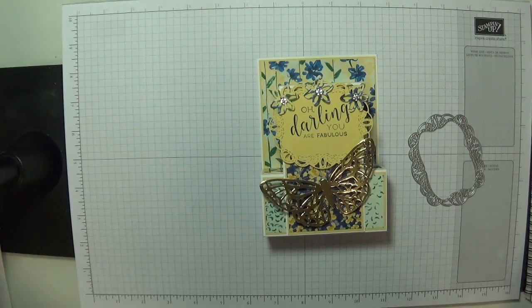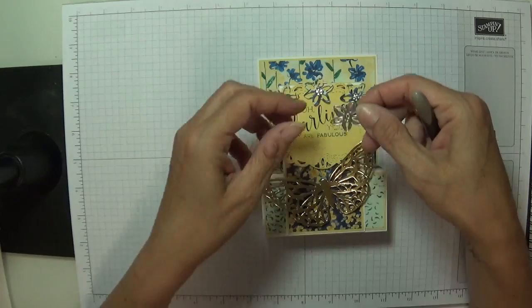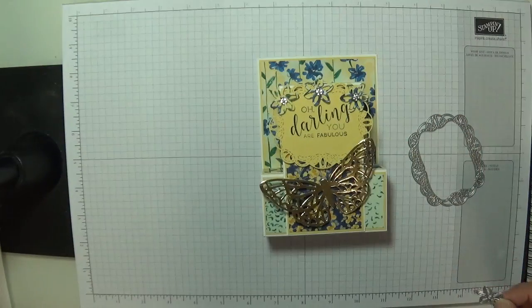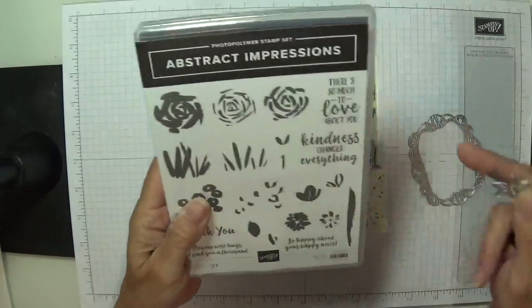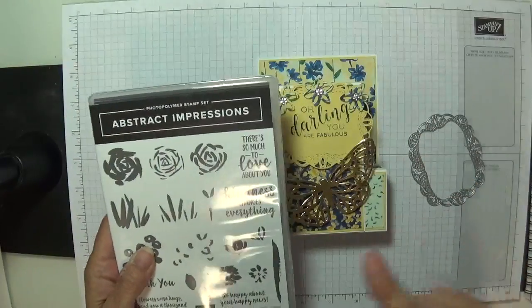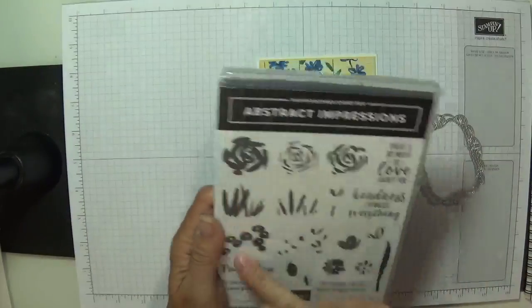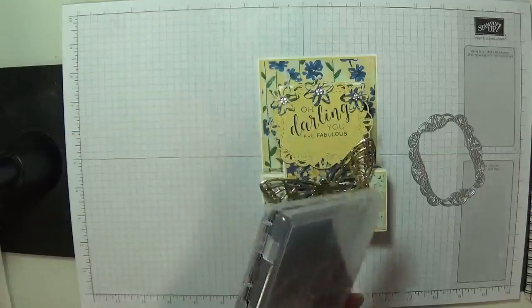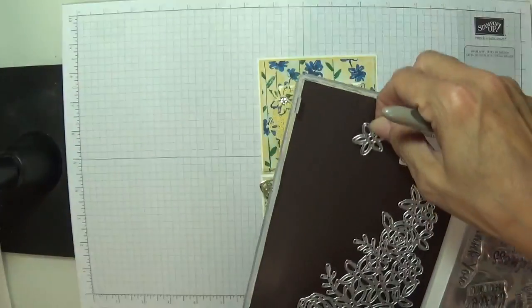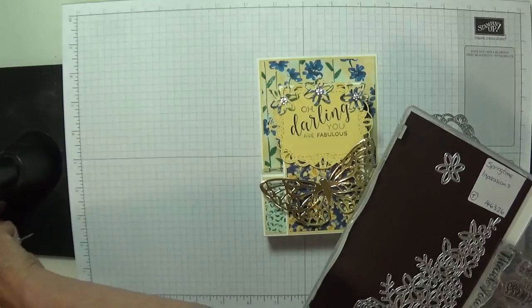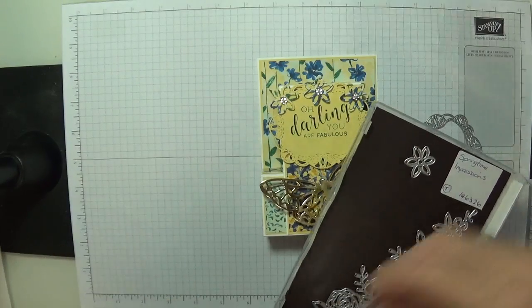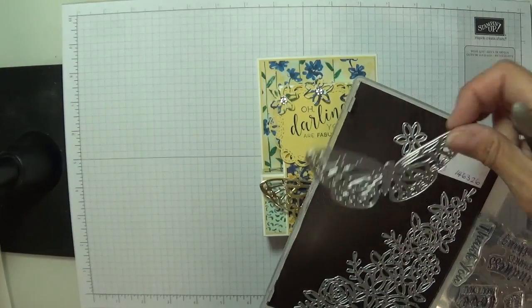I came across it on my shelf and I thought oh I've got it. I didn't realize I had it. I used the little flower from the abstract expressions and I've used a sentiment from the other one. I've only used the flower and the butterfly from this set.